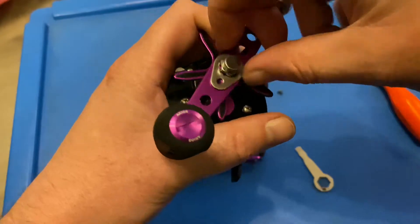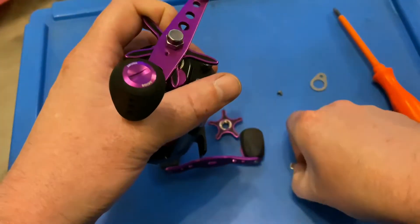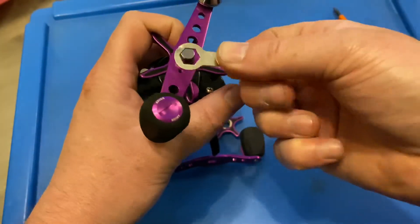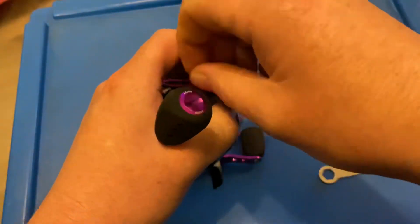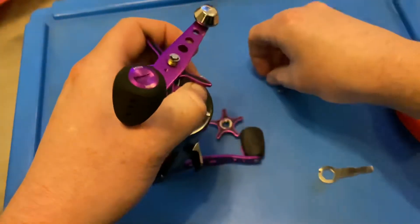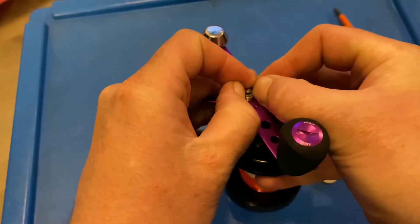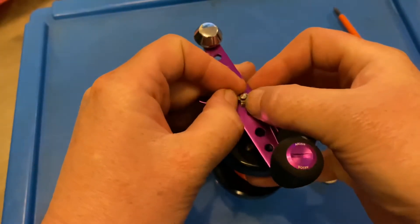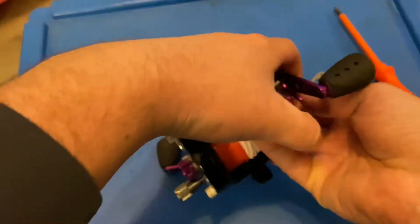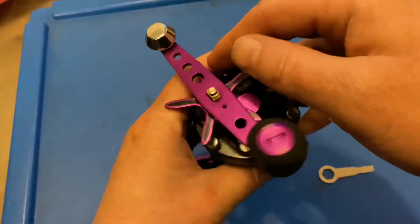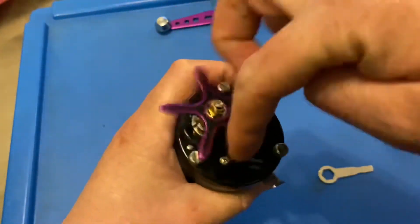Just a quick small screw out with the tool that comes in the box with your reels. Little circlip - be careful, don't lose it. Handle comes off, star drag winds off.